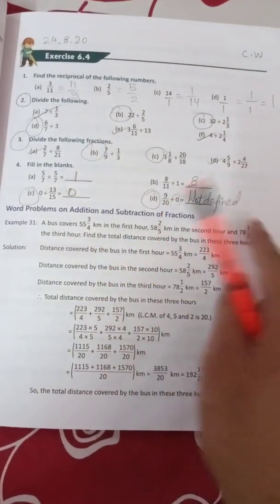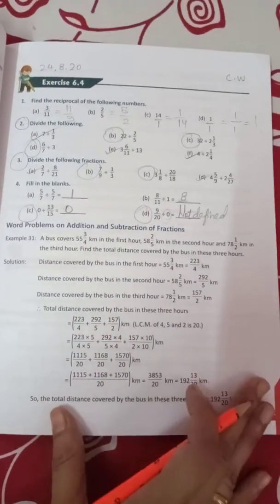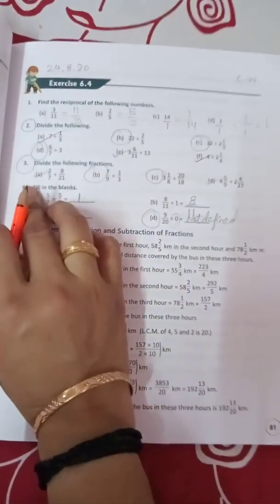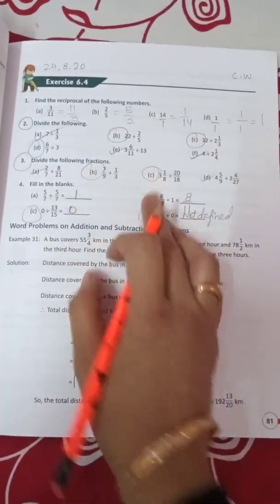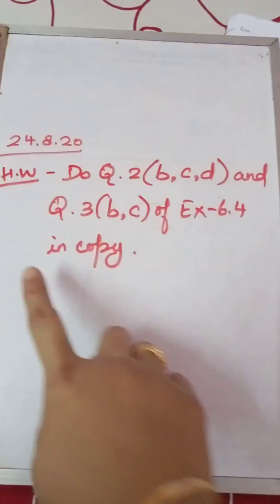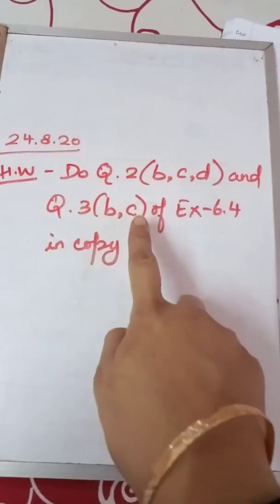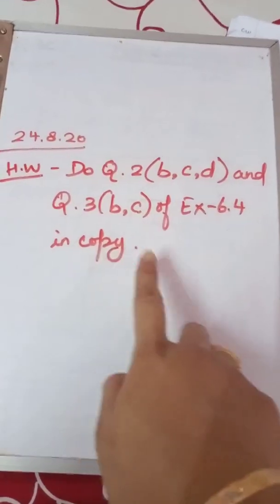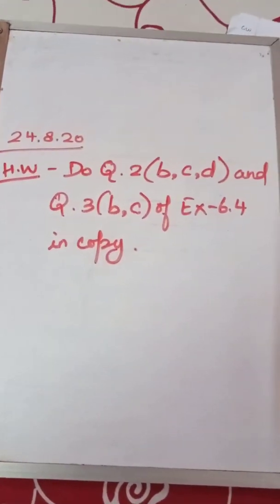This much for today students. Please do question number 2 and 3 — the circled parts — in the copy. Your homework is question number 2 b, c, d and question number 3 b, c of exercise 6.4 in copy. Have a nice day students, God bless you all.